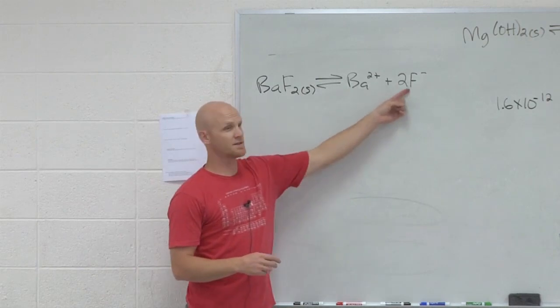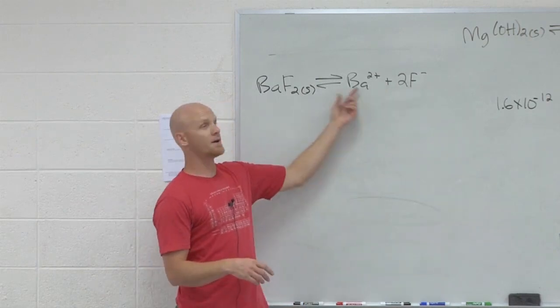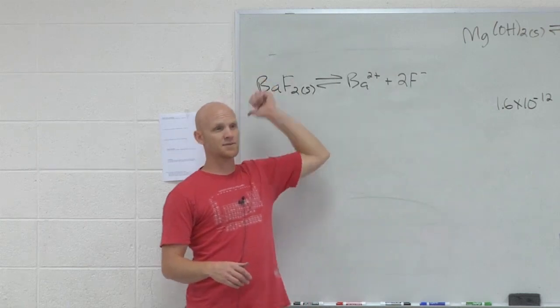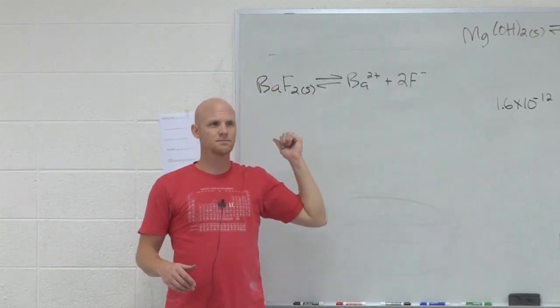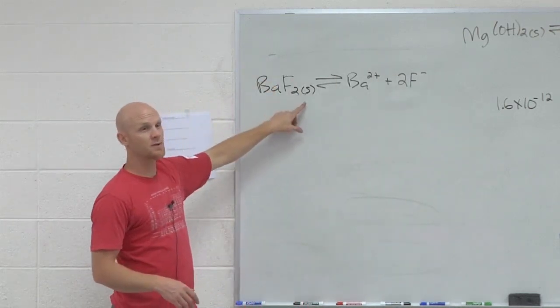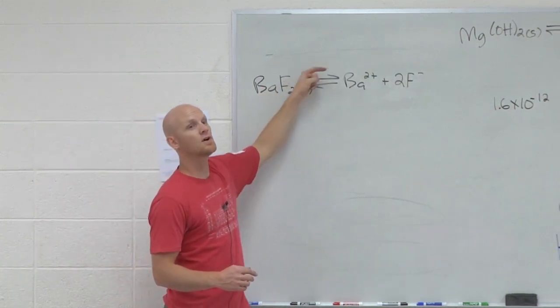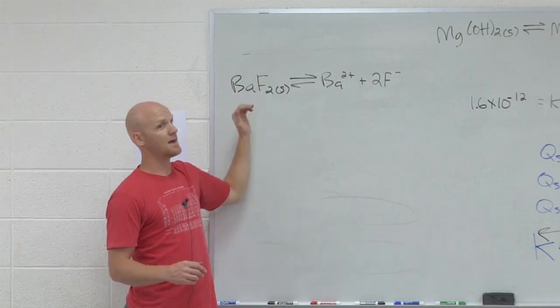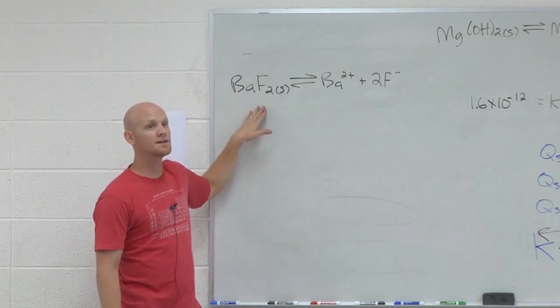Yeah, add either one of these. Common ion, it's going to shift it left. Add fluoride ion solution, it'll shift it left. Right, because notice soluble refers to how much dissolves, how much solid dissolves to the right. So if we're shifting left, that means overall less solid will remain dissolved.